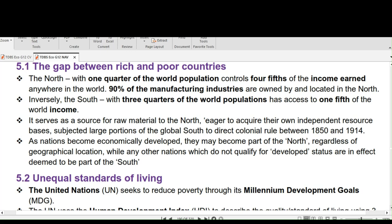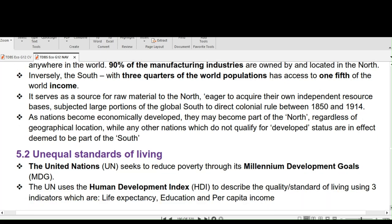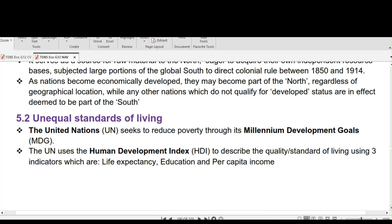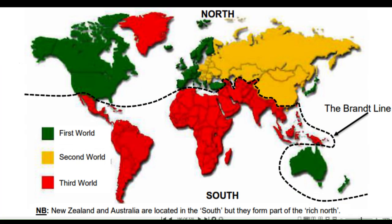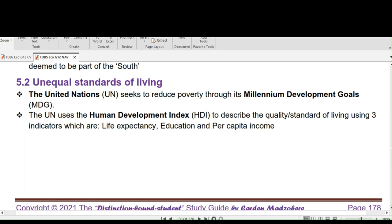The South serves as a source of raw materials to the North. Eager to acquire their own independent resource bases, northern nations subjected large portions of the global South to direct colonial rule between 1850 and 1914. As nations become economically developed they may become part of the North regardless of geographic location, while nations that do not qualify for developed status are deemed to be part of the South, also regardless of geographical location.